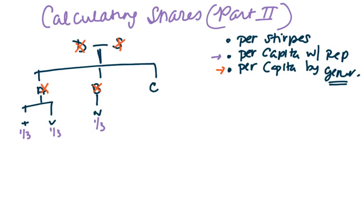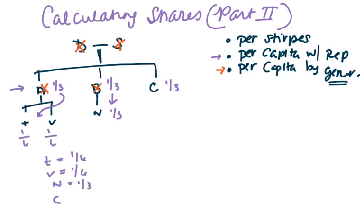Using per capita with representation, we would begin by dividing the share at the first generation with a living taker, which is this generation here. So we would divide the estate into one-thirds. Then A and B have pre-deceased B, so we would drop down the shares here. The answer would be that T gets one-sixth, V gets one-sixth, N gets one-third, and C gets one-third.